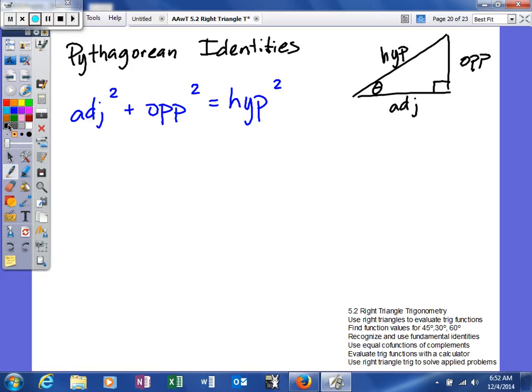And basically what we're going to do for each of these is we're going to take your Pythagorean theorem and rewrite it in a different manner. So what I'm going to do is I'm going to take each thing and divide it by the adjacent side squared.